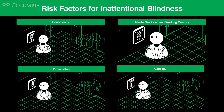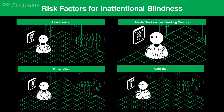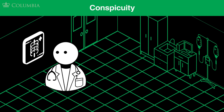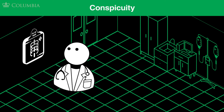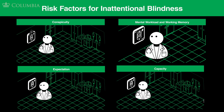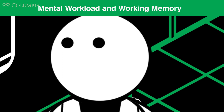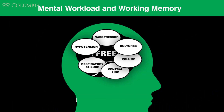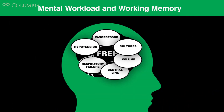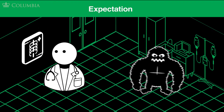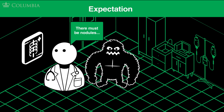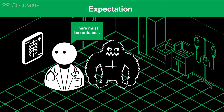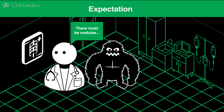Inattentional blindness can occur if the stimulus is not conspicuous — maybe the gorilla wasn't easily seen. This type of blindness may also occur if the mental workload is high; perhaps the radiologist had been busy with other tasks. Inattentional blindness can also be associated with expectation — for example, a provider may block out possibilities if they're expecting to find a lung nodule.